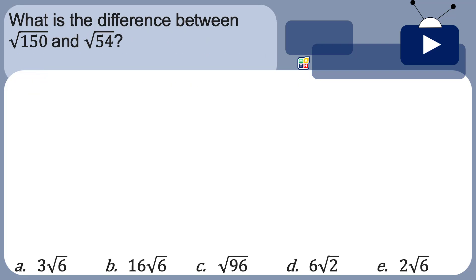What is the difference between the square root of 150 and square root of 54? Is it A, 3 square root of 6, B, 16 square root of 6, C, square root of 96, D, 6 square root of 2, or E, 2 square root of 6?